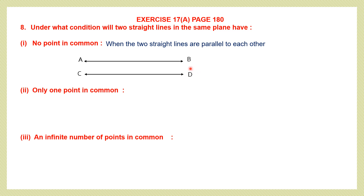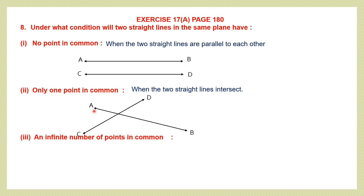Question 2: Under what condition will two straight lines in the same plane have only one point in common? They will have one point in common when the two straight lines intersect each other. Here we have two lines AB and CD, and they have intersected at a particular point, so they have one point in common.